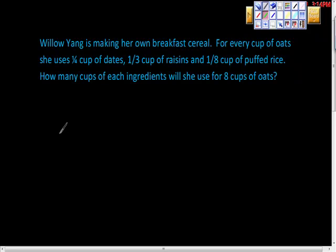Willow Yang is making her own breakfast cereal. For every cup of oats, she uses 1/4 cup of dates, 1/3 cup of raisins, and 1/8 cup of puffed rice. Except for the puffed rice, it sounds pretty good, but puffed rice is yucky. Sorry. How many cups of each ingredient will she use for 8 cups of oats?